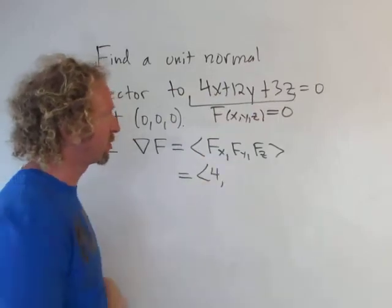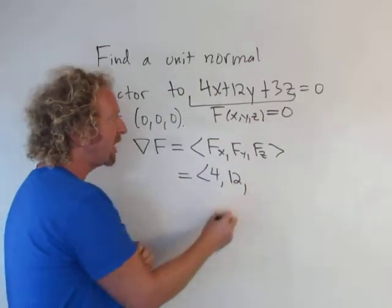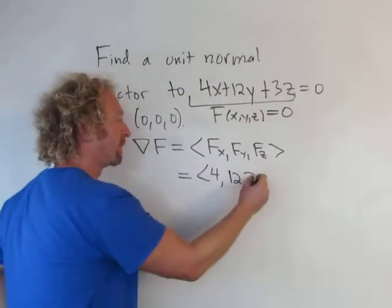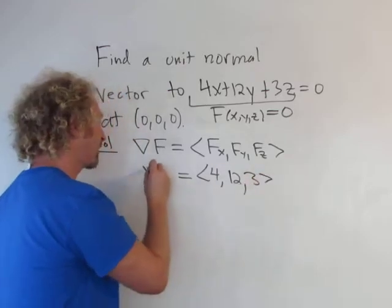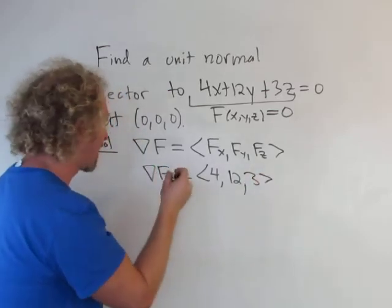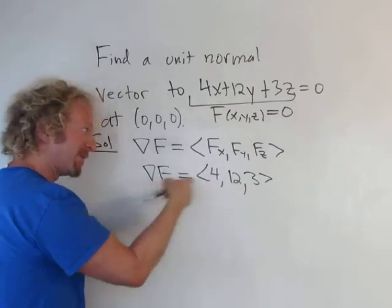The partial with respect to y is 12, and the partial with respect to z is 3. So that's the gradient vector. So at (0, 0, 0), it's still the same because there's no x, y, or z.